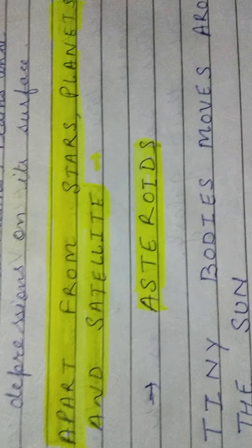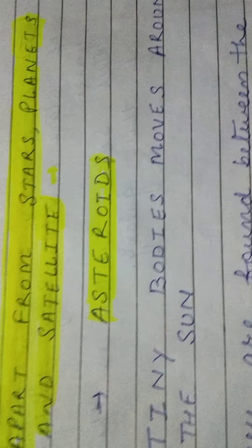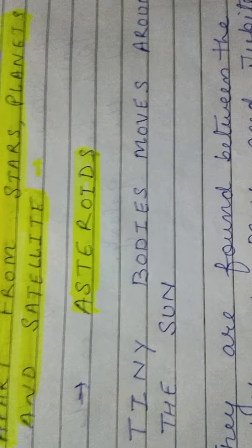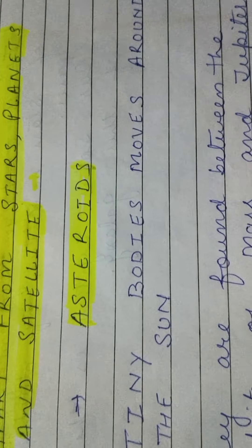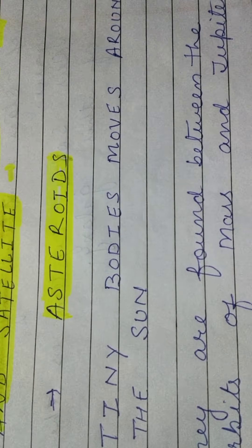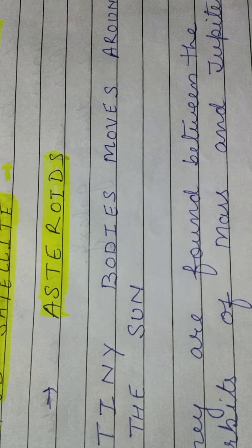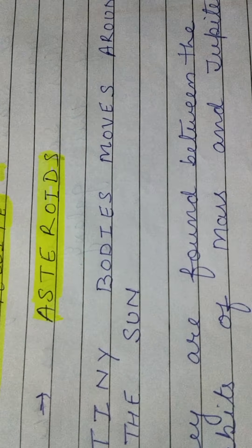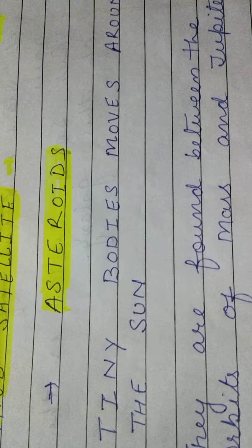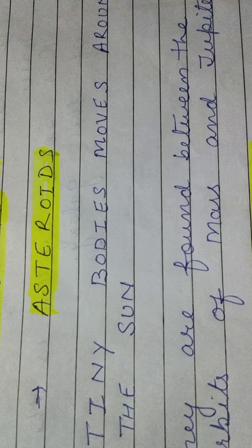Apart from stars, planets and satellites, there are some tiny bodies that move around the sun — these are called asteroids. What are asteroids? These are tiny bodies that move around the sun, same as planets. They are found between the orbits of Mars and Jupiter, and they move around the sun same as planets and satellites.